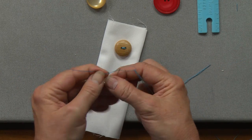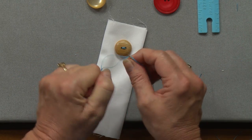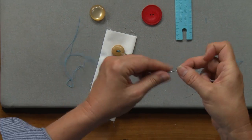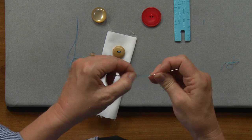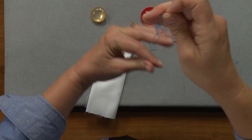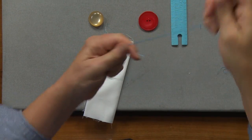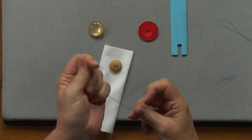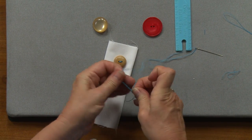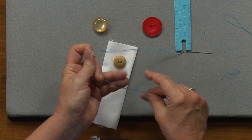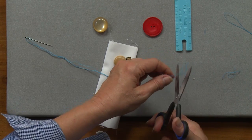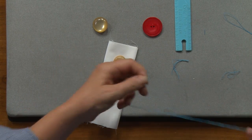There we go. Put the doubled end through, pull my needle through and the thread, bring it down in half, tie myself a good little knot and trim it off.